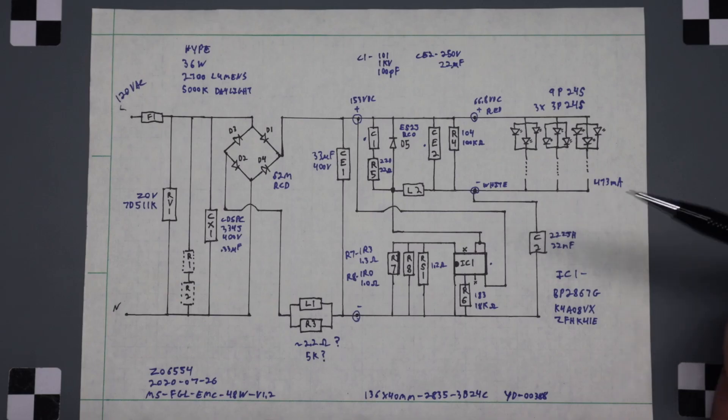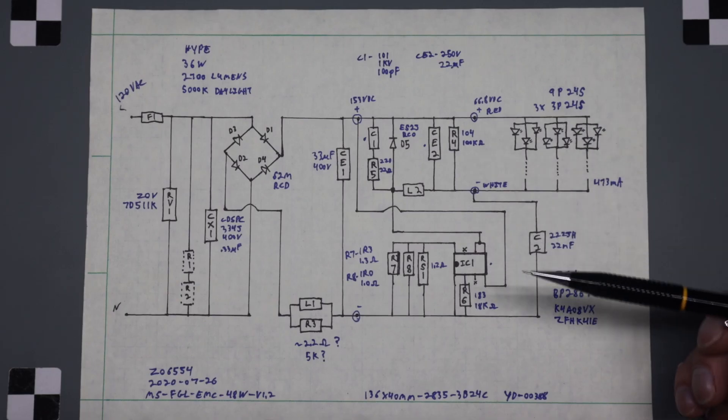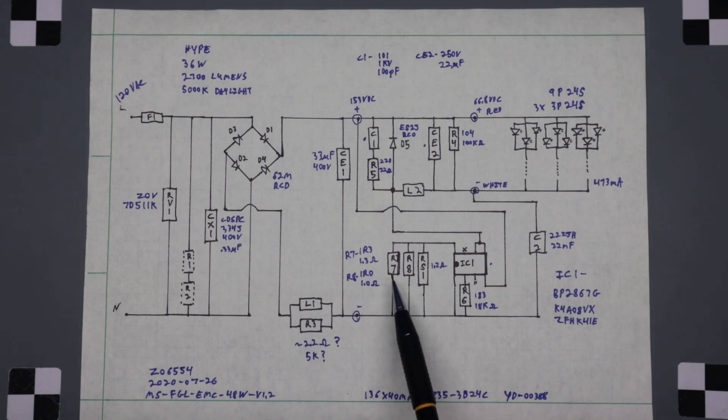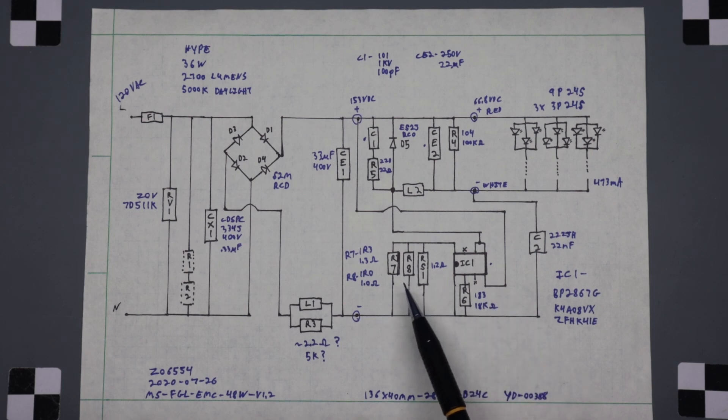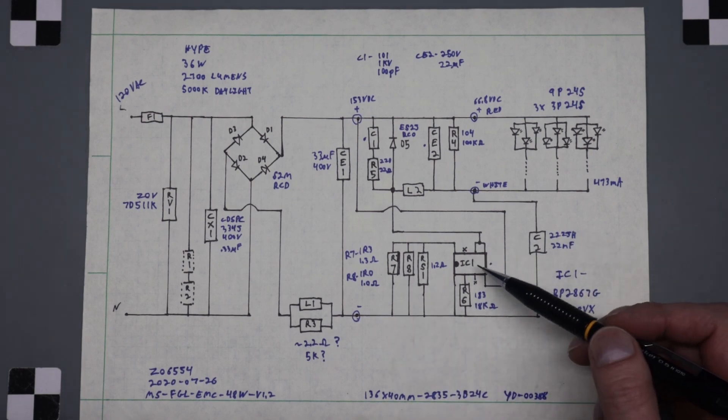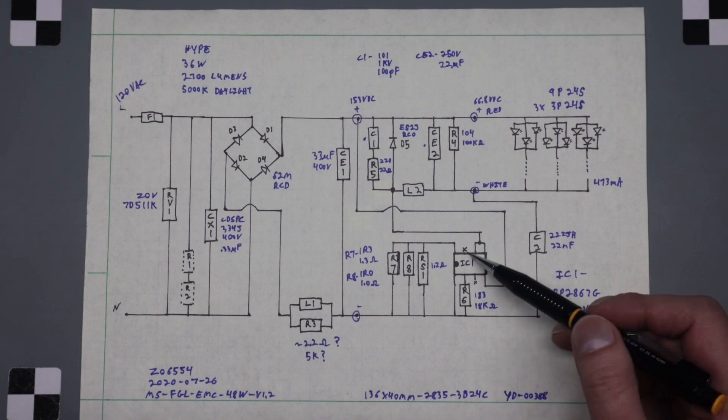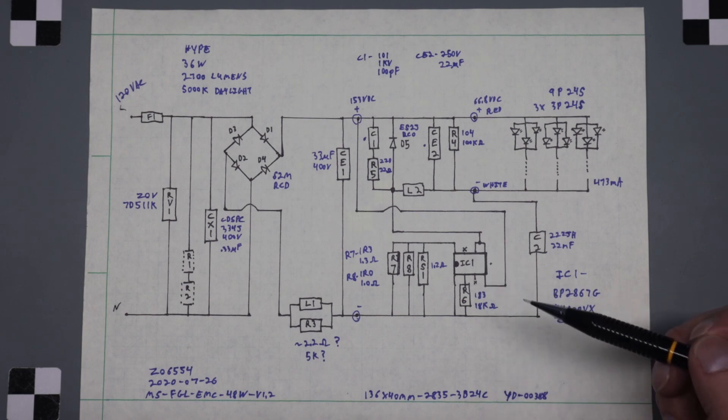So basically it looks pretty similar. They only added a couple things. I could barely see what the values of these resistors were, but just barely. The IC has two pins that aren't used.